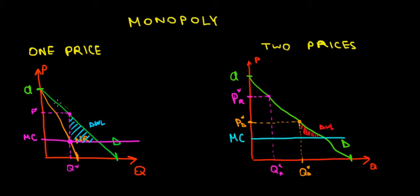From the entire consumer surplus we used to have, we're clearly losing this trapezoid. But part of that trapezoid becomes the producer surplus, which is a gain. Overall, we are losing this blue triangle — this is our deadweight loss. This is something that cannot be compensated either to consumers or to producers, so it's just gone due to the inefficiency of selling as a monopolist.